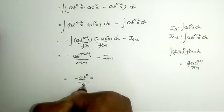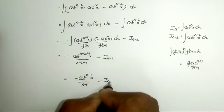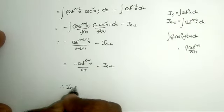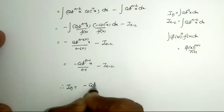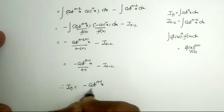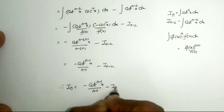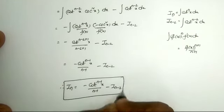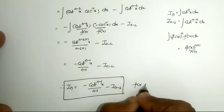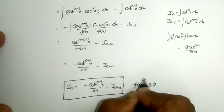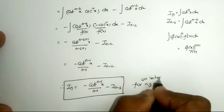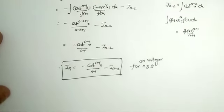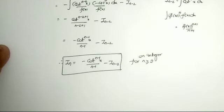So this equals minus cot^(n-1) x divided by (n-1) minus I_(n-2). Therefore the reduction formula is: I_n equals minus cot^(n-1) x divided by (n-1) minus I_(n-2). This formula is applicable for integers n greater than or equal to 2.